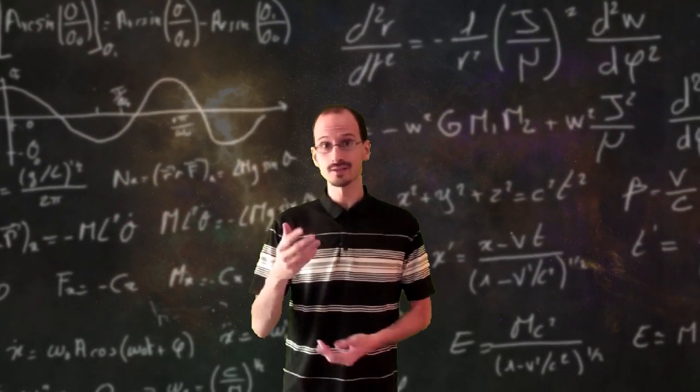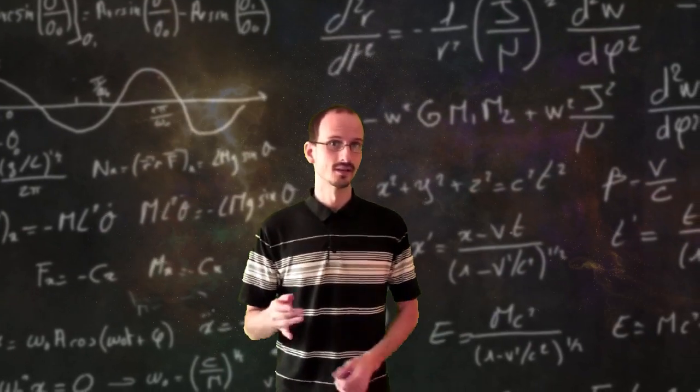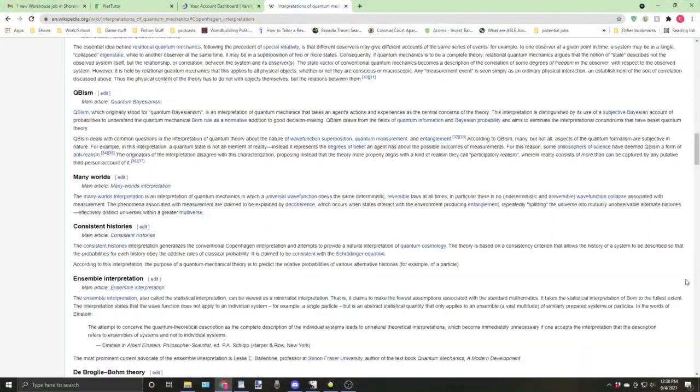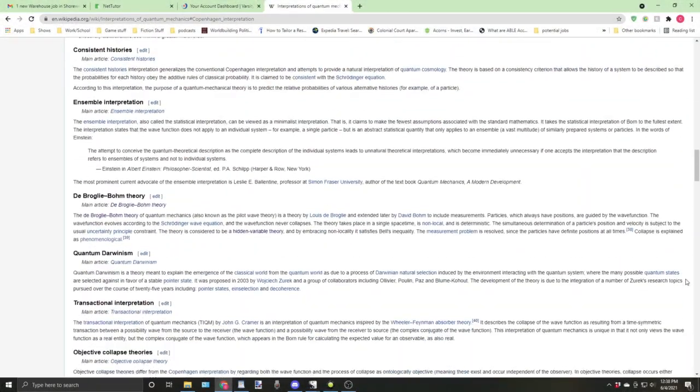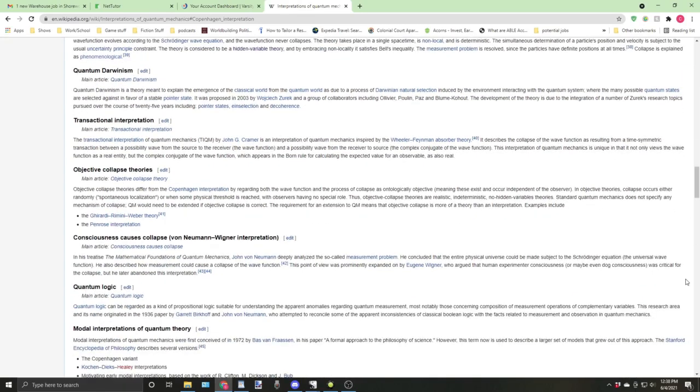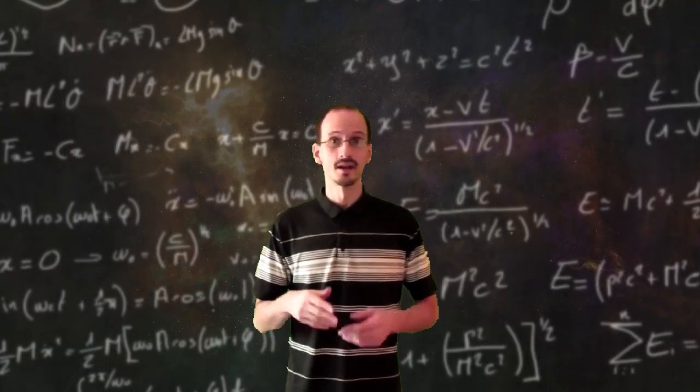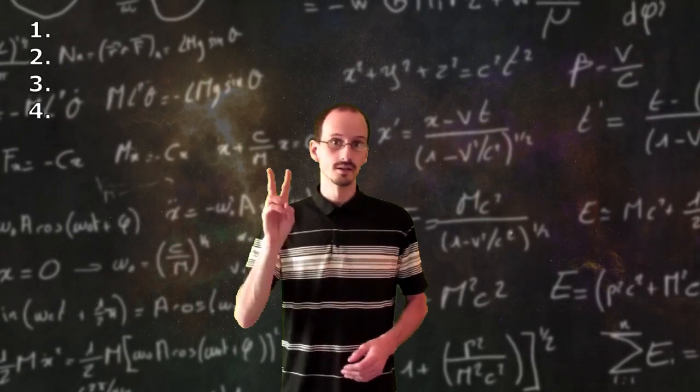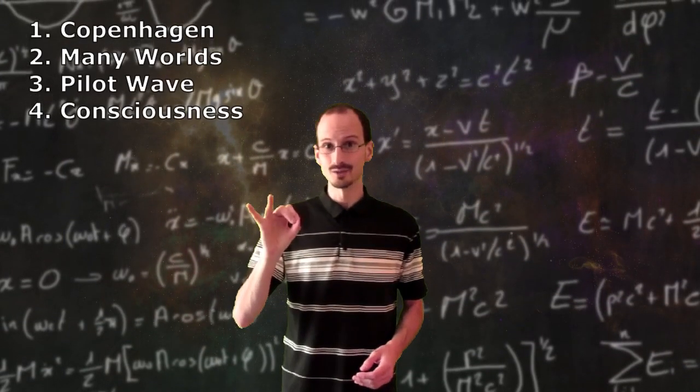But just because we don't know the answer doesn't mean we lack for explanations. If you look up interpretations of quantum physics on Wikipedia, you'll find a long list. But many of these are variations on the same ideas, and they boil down to four. Two main contenders and two tagalongs.